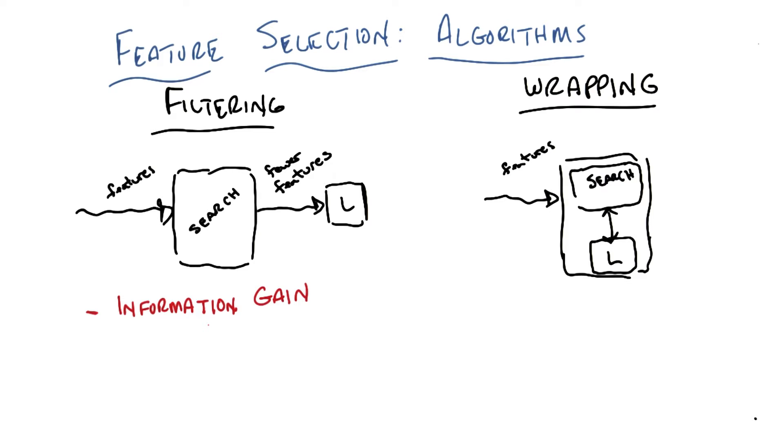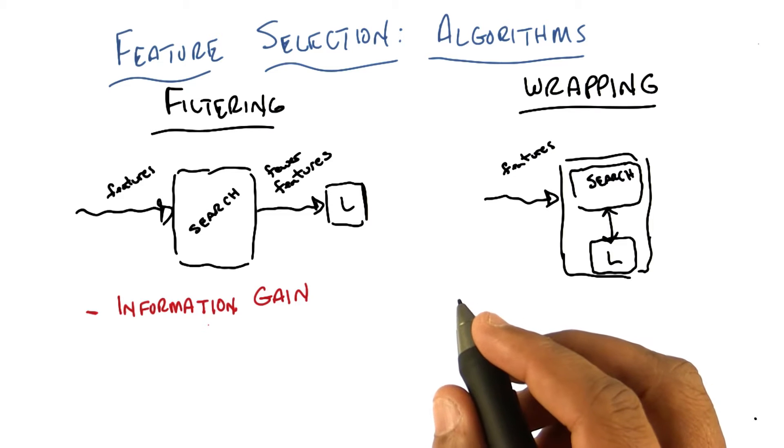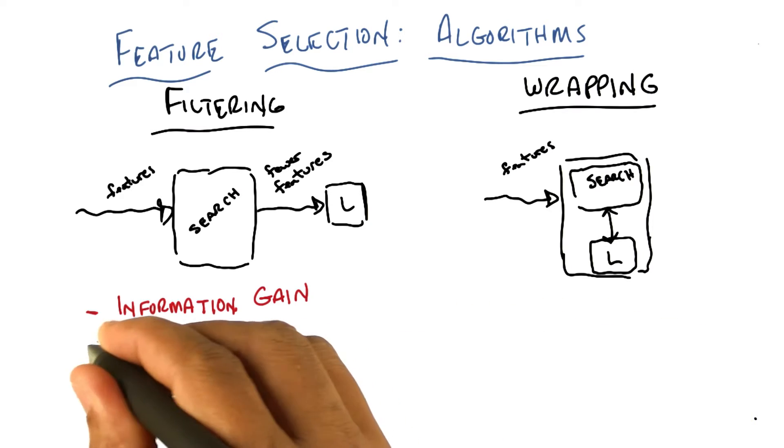So, I don't know, variance? Like, I want features that have lots of different values that'll do something similar to information gain, I suspect. Okay, yeah. I like that one.